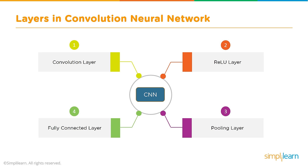Looking at the layers in a convolutional neural network: we have the convolution layer — the central aspect of processing images — feeding into the ReLU layer (Rectified Linear Unit), which is the activation function that makes neurons fire. Then the pooling layer pools or reduces data together. Finally, we have the fully connected layer where our output comes out.